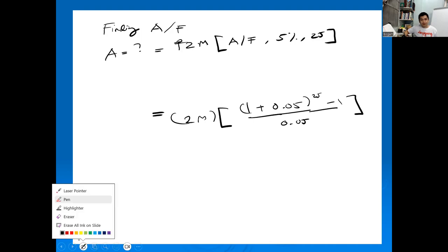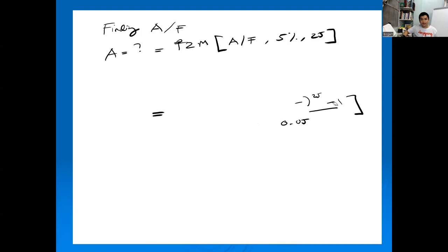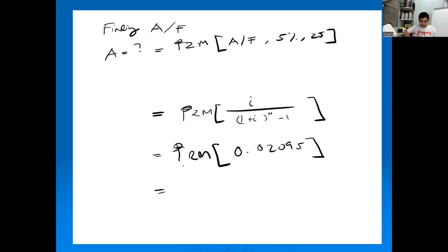Let me correct that. Finding A given F uses the sinking fund formula: i over ((1+i)^n - 1). This will be 2M multiplied by 0.05 divided by (1.05)^25 minus 1. Computing: 1.05 raised to 25 minus 1, divided by 0.05, times 2 million equals approximately 41,000 to 42,000 pesos.